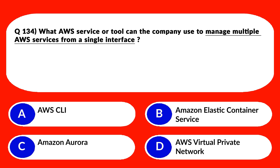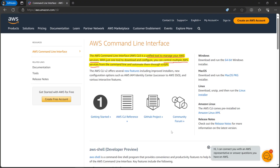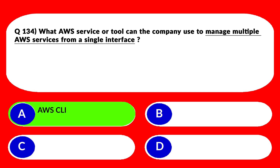This looks to be easy. We'll look at options B, C, and D together. B is Amazon Elastic Container Service, C is Amazon Aurora, and D is AWS Virtual Private Network. All three cannot be used to manage multiple AWS services from a single interface, which is what the question demands — so these are incorrect choices. We are left with AWS CLI. It's written: AWS CLI is a unified tool to manage your AWS services. With just one tool to download and configure, you can control multiple AWS services from the command line and automate them through scripts. So we'll lock option A as the correct answer.